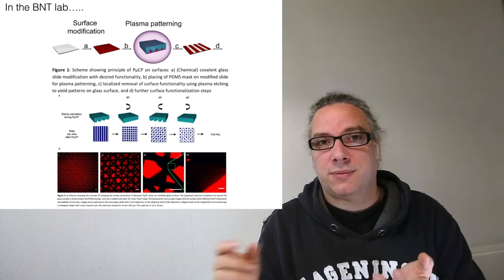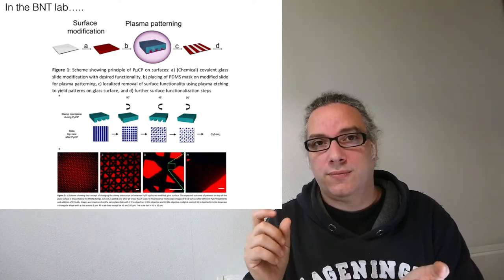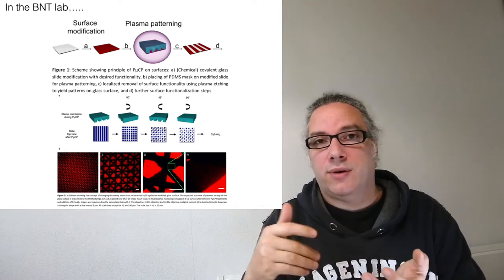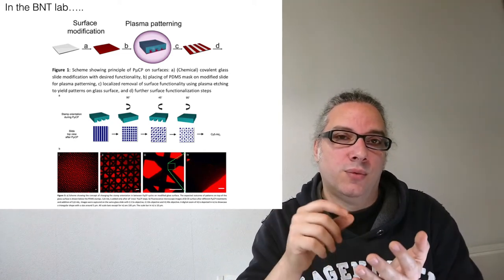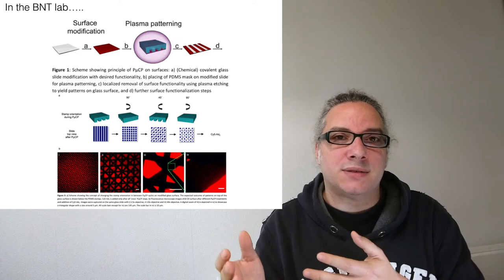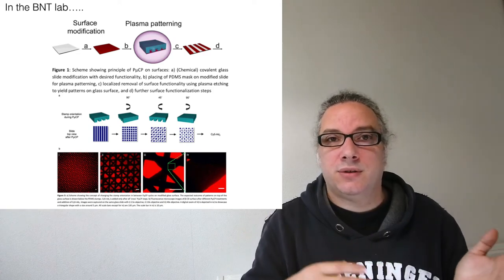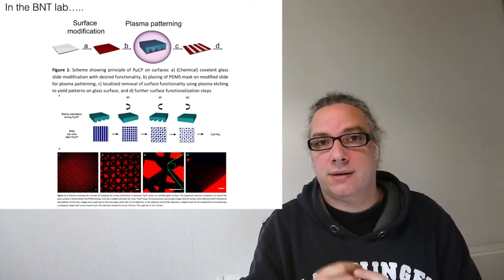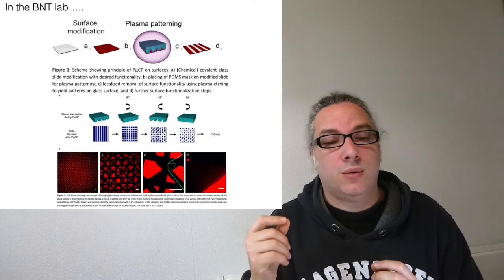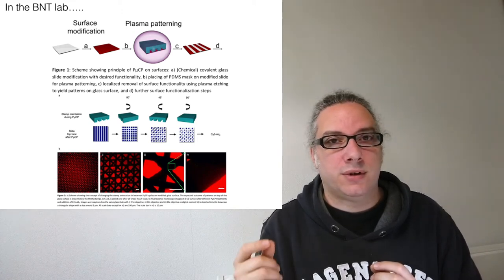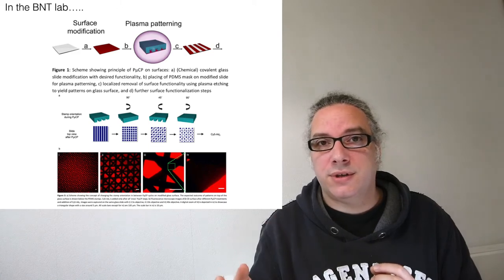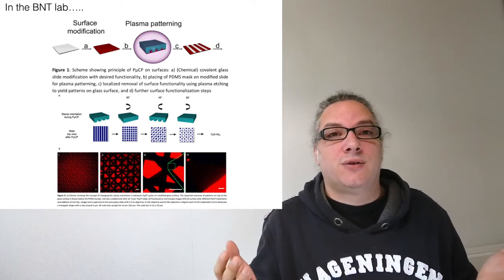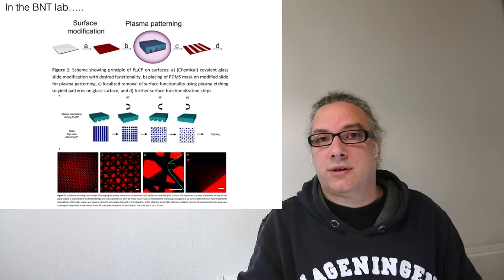So once you finish the plasma treatment, you remove the PDMS and you have the protected slide which is still there. Most importantly, if you move your stamp between one plasma and the other plasma treatment, you can really reach very small features on the glass which are extremely difficult if you want to micro contact print them. So we can reach micrometer features without using any clean rooms or without using any particular machine.